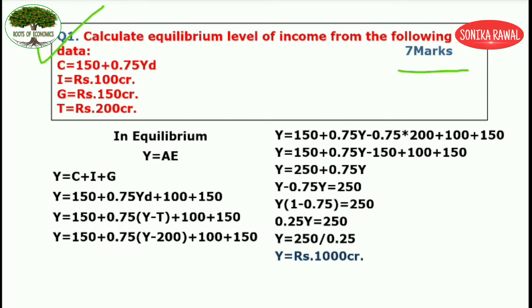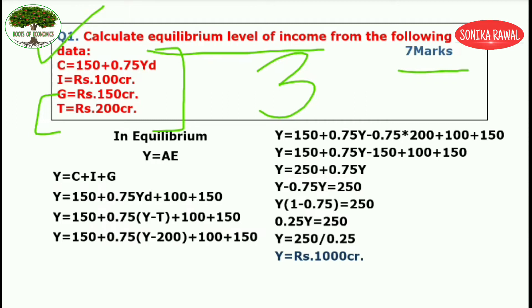Starting with question number one which is for seven marks. Here you are given consumption, investment, government expenditure and taxes. Since G and T are given, this indicates a three sector economy model. You have to find the equilibrium level of income, meaning you start by saying: in equilibrium, Y is equal to AE. In a three sector economy model, AE is equal to C plus I plus G.